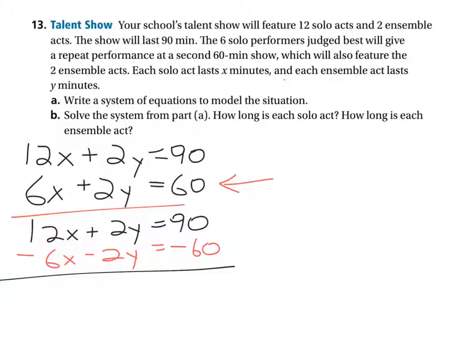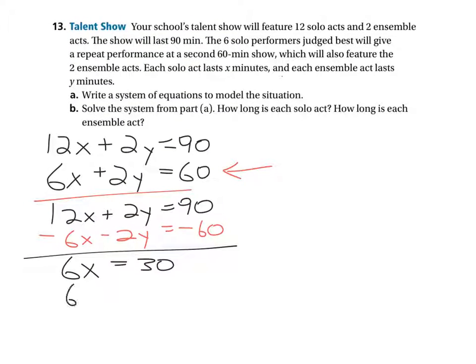The point of this is that I've changed the sign of everything in here so that now we've got opposites, 2Y and negative 2Y. Now we can just add them together. So we've got 12X and negative 6X, positive 6X left over. The Y's cancel each other out. And 90 minus 60 is 30. So we get 6X equals 30 or 6X divided by 6 equals 30 divided by 6. X equals 5.